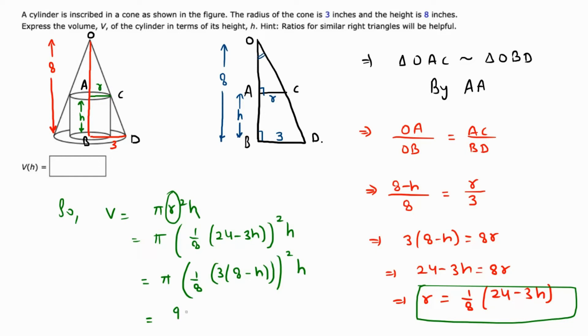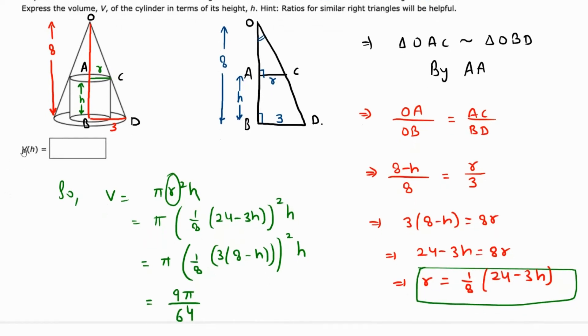Since 3² = 9 and 8² = 64, we have V = (9π/64)(8 - h)²h. This is the required expression for the volume of the cylinder. Thank you.